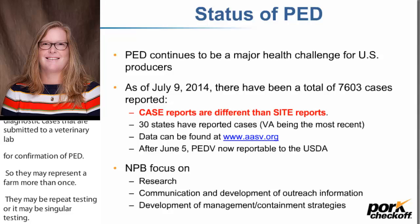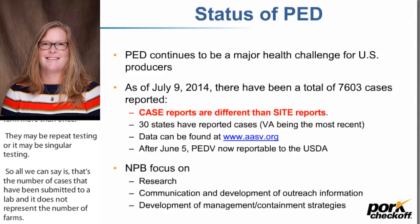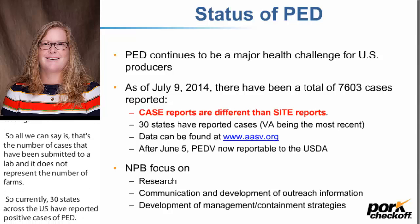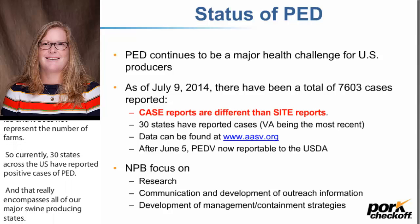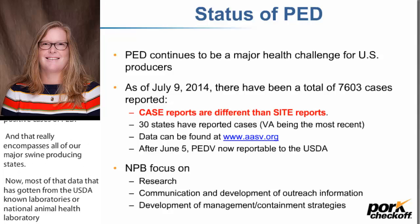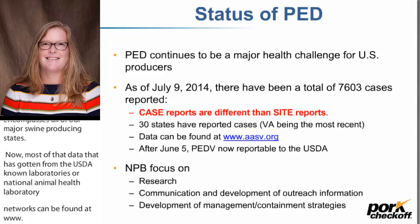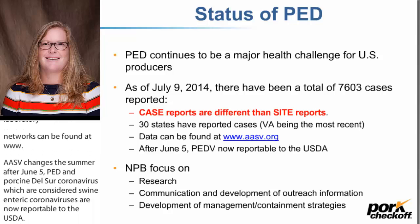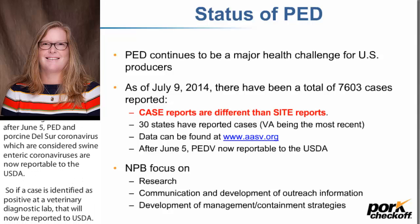Currently, 30 states across the U.S. have reported positive cases of PED, encompassing all of our major swine-producing states. Most of that data from the USDA National Animal Health Laboratory Network can be found at www.aasv.org. After June 5th, PED and porcine delta coronavirus — considered swine enteric coronaviruses — are now reportable to the USDA, so positive cases identified at a veterinary diagnostic lab will be reported, allowing us to better track the number of farms affected.